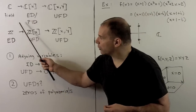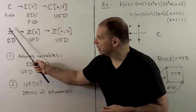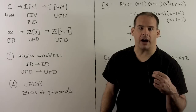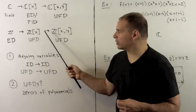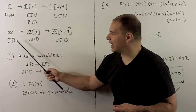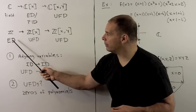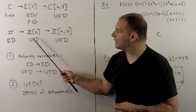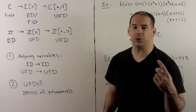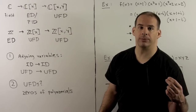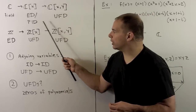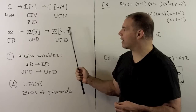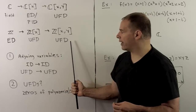Similarly, if I start with the integers — here we have a Euclidean domain — we adjoin a variable, so I consider polynomials in x over the integers. Again, this is going to jump from Euclidean domain to UFD. Here, the ideal generated by 2 and x is not principal. If I adjoin another variable, so we have polynomials in x and y over the integers, it's going to stay a UFD.